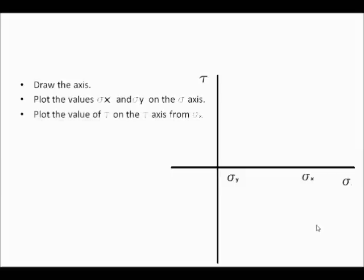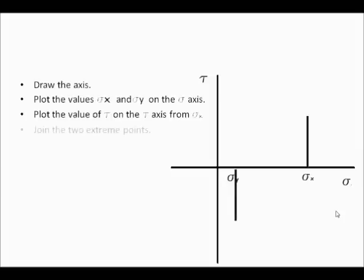Now we have to plot the value of tau on the tau axis from sigma x — the value of tau is to be plotted from sigma x in the positive y-direction. Again, tau has to be drawn from sigma y in the negative direction. Now we have to join the two extreme points.